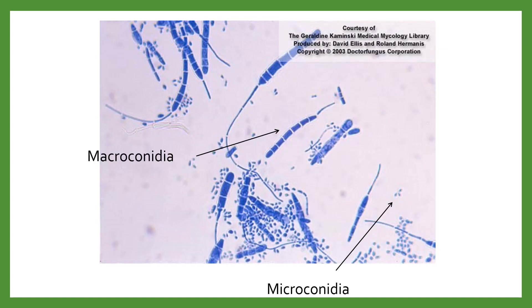In this picture we have a dermatophyte, which is toenail fungus. You can see long cigar-shaped elements that have sections — that is a large conidia known as a macroconidium. The little tiny ones at the bottom right are called microconidia, which are very small or mini conidia.